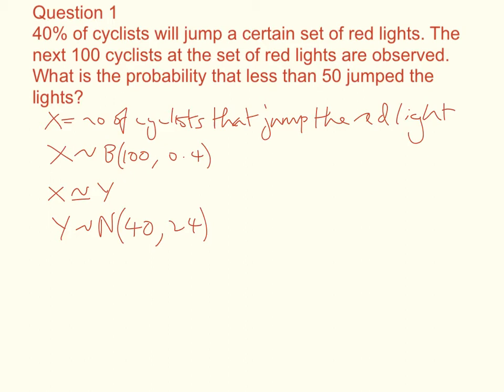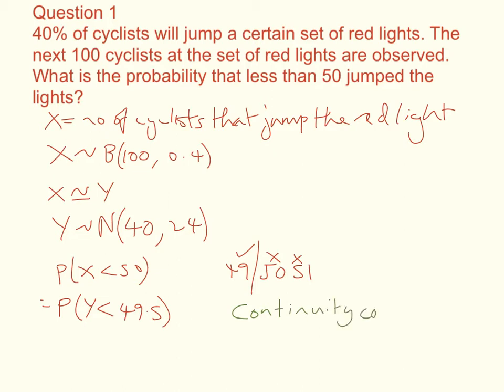Now we need to calculate the probability. So what we're being asked is the probability that x is less than 50. Now we need to turn this discrete data into continuous data. So we're going to say that is the same as the probability that y is less than, we need to do our continuity correction here. So these are the numbers that we're looking at. We want 49, but we don't want those two. So it's going to be less than 49.5. So this is where the continuity correction comes in. This is so important, this must go into all normal approximations for binomial and for Poisson distribution as well.